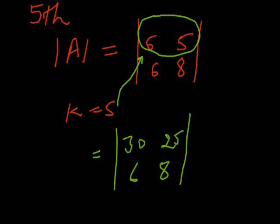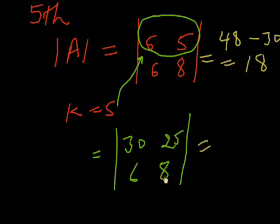Let's verify: for the original determinant, 6 times 8 equals 48, minus 6 times 5 equals 30, giving us 18. For the modified determinant, 30 times 8